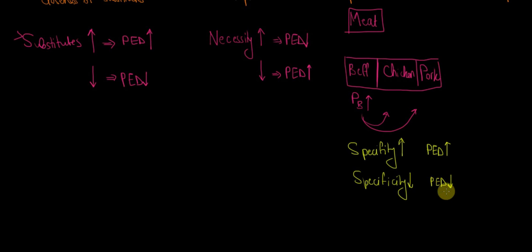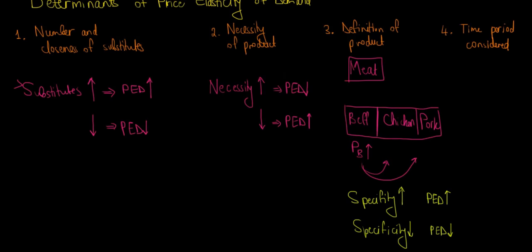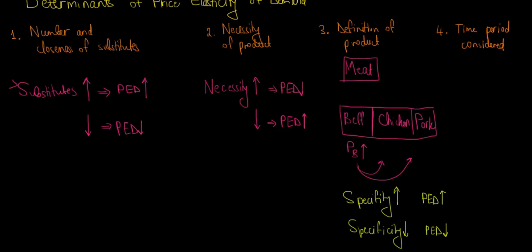Conversely, if we keep a broad concept of the product — like meat, food, or furniture as a whole — the price elasticity of demand is relatively low. We still need that broad category. However, within furniture, if chairs become too expensive, we might buy more armchairs instead. That kind of example illustrates how specificity of definition affects elasticity.